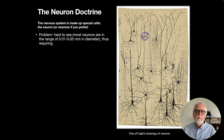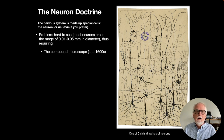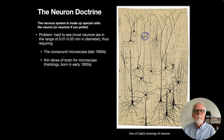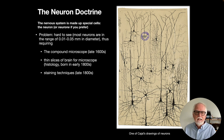In order for scientists to even know that neurons were there, they first needed a compound microscope, which wasn't developed until the late 1600s. Then they needed thin slices of the brain, requiring the field of histology, born in the early 1800s. Finally, staining techniques — developed in the late 1800s — allowed scientists to stain different kinds of cells and see clearly how they were separated from each other.